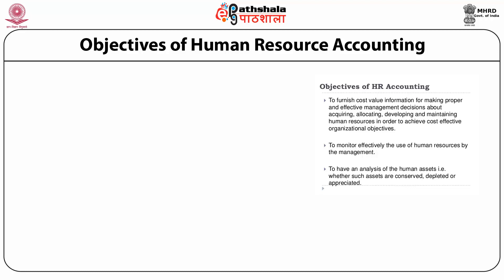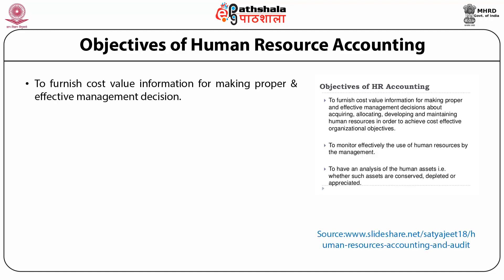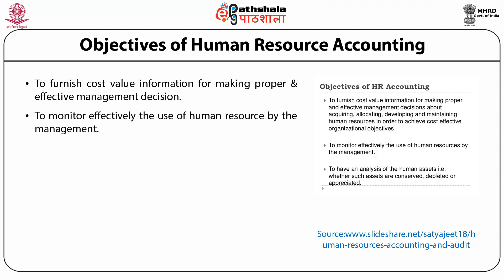The main objectives of human resource accounting systems are as follows. First, to furnish cost-value information for making proper and effective management decisions about acquiring, allocating, developing and maintaining human resources in order to achieve cost-effective organizational objectives. Second, to monitor effectively the use of human resource by the management. Third, to have an analysis of human assets, i.e., whether such assets are conserved, depleted or appreciated.